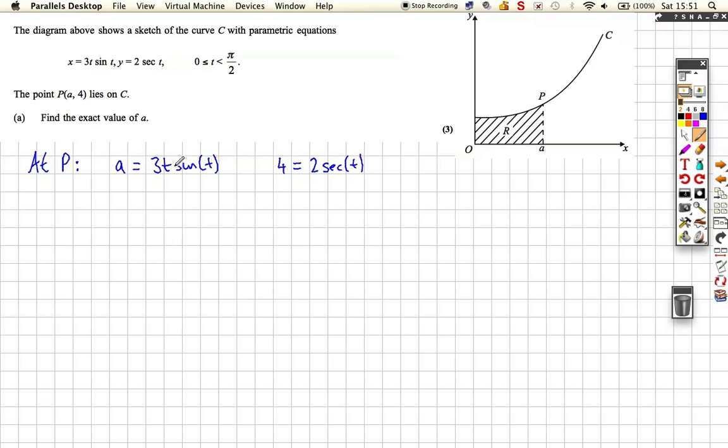So 4 is equal to 2 sec t. Now if we look at these two equations, this one here, the first one, the one we've got from the x, has actually got two unknowns. It's got an A and t, which obviously we can't solve with just one equation. However, we could use a second one which only has one unknown in order to find t, and then substitute our value of t up into here.